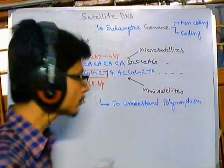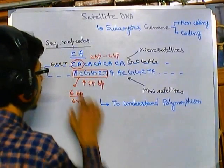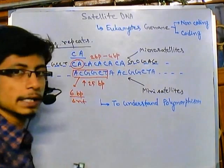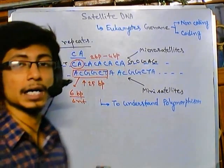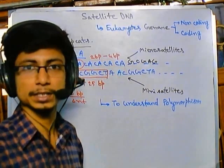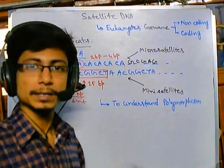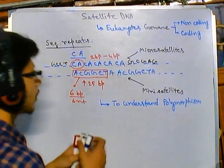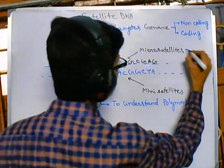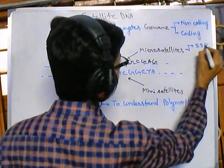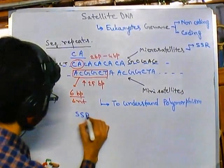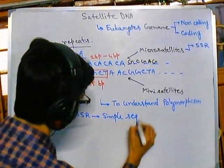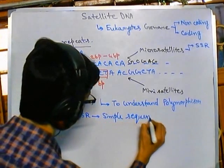This flanking region remains constant across individuals in most cases. These repeat sequences in the middle, flanked by conserved regions, are called SSR or Simple Sequence Repeats.